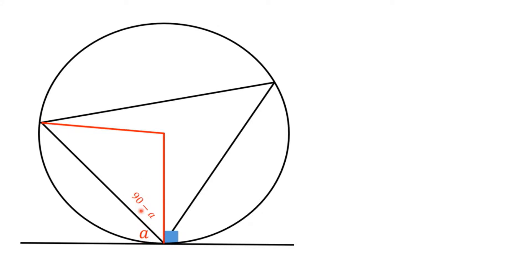Well, if that's 90 minus A, I can also see that this is an isosceles triangle, and the base angles in an isosceles triangle are equal. So that one has to be 90 minus A as well.